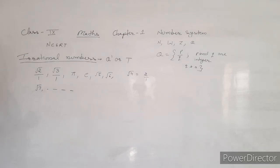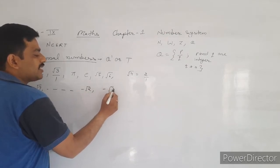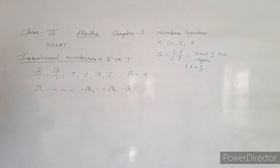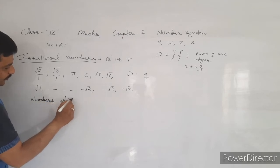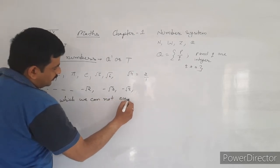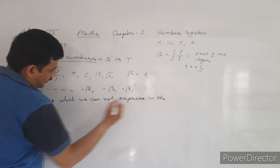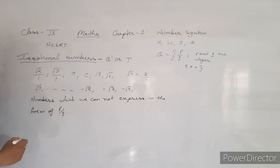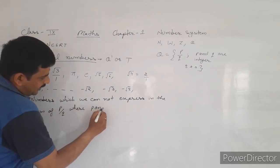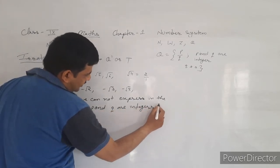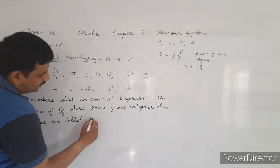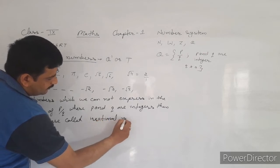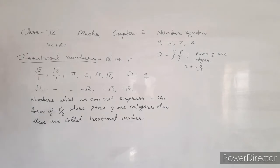Irrational numbers can be negative or positive. That means minus root 2, minus root 3, and minus root 5 are all irrational numbers. The normal definition of irrational numbers is: numbers which we cannot express in the form of p upon q, where p and q are integers, are called irrational numbers. These are the examples we have studied.